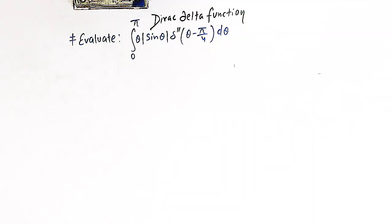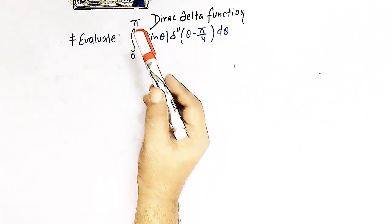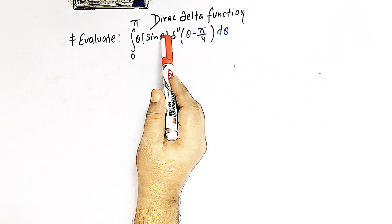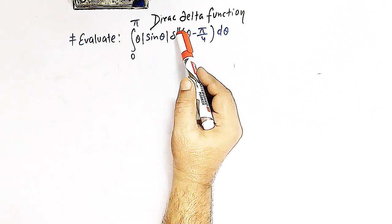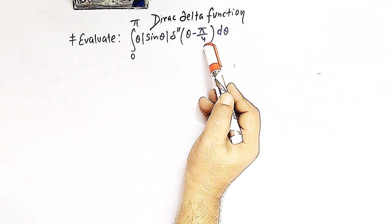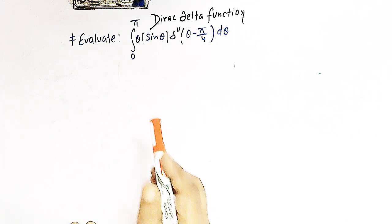Hello viewers. In today's session we are going to discuss another important problem involving the Dirac delta function. Here we will evaluate the integral from 0 to π of θ times the absolute value of sin θ times δ''(θ − π/4) dθ.